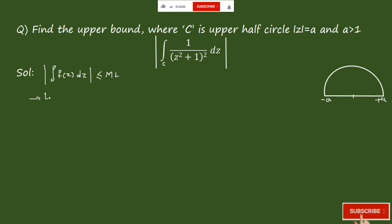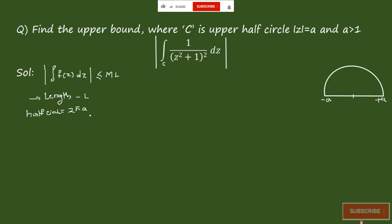Finding the length L: the full circumference of a circle is 2πa. Since we are considering the upper half circle, we divide by 2, giving L = πa.